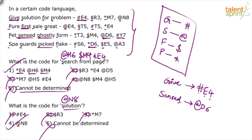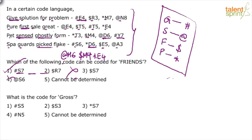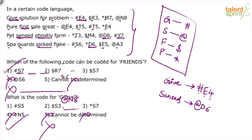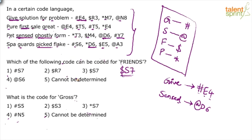There are three more questions. First: which code can be used for 'friends'? F is coded as $. Last letter is S. Count of letters: F-R-I-E-N-D-S = 7 letters. So the code is $S7. That is option 3. Next: what is the code for 'gross'? G is coded as #. Last letter is S. Count of letters is 5. So the code is #S5. That is option 1.